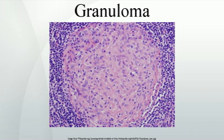Granuloma annulare: Granuloma annulare is a skin disease of unknown cause in which granulomas are found in the dermis of the skin. These granulomas typically have a central zone of mucin, which aids in the diagnosis when a skin sample is viewed under the microscope.